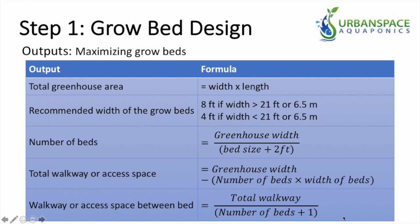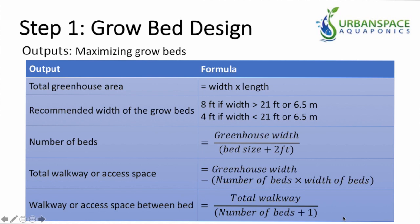Next, look at the walkway or access space between each bed. You want to make sure you have enough space between beds to reach plants in the middle. The formula is: total walkway space divided by (number of beds plus one). The 'plus one' accommodates the space on both the far right and far left sides of your first and last grow beds, so you or your employees harvesting crops can reach the plants there.